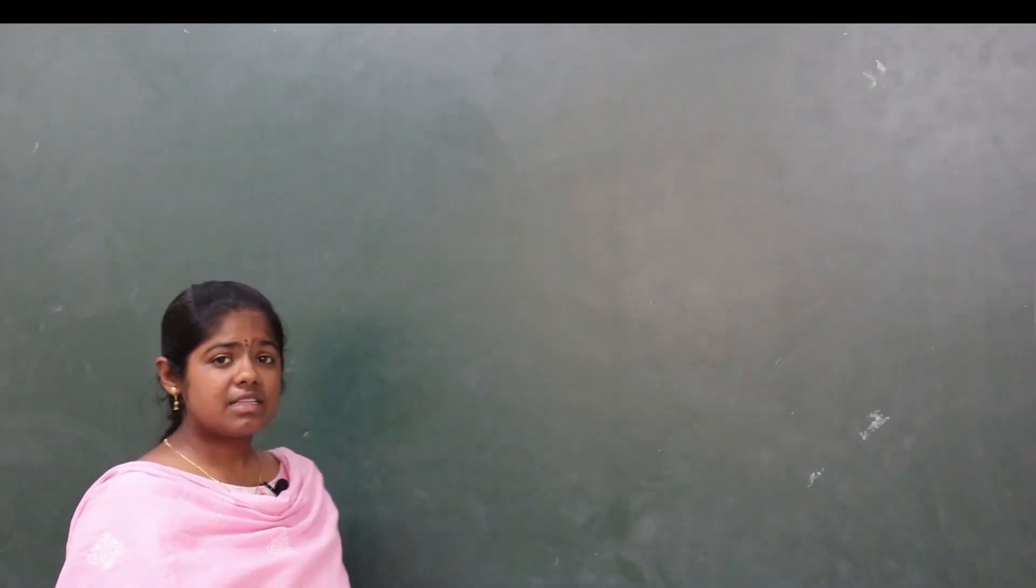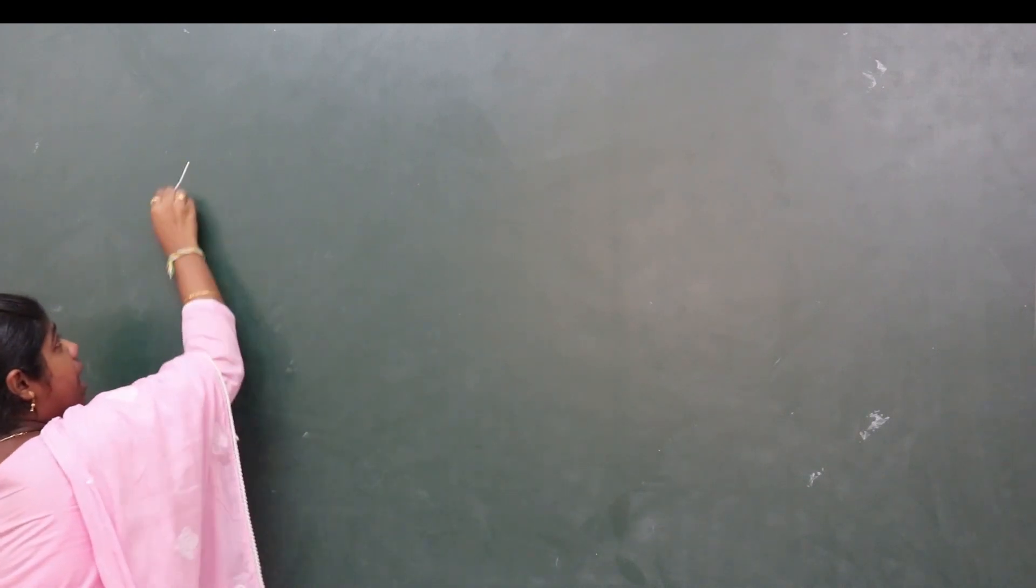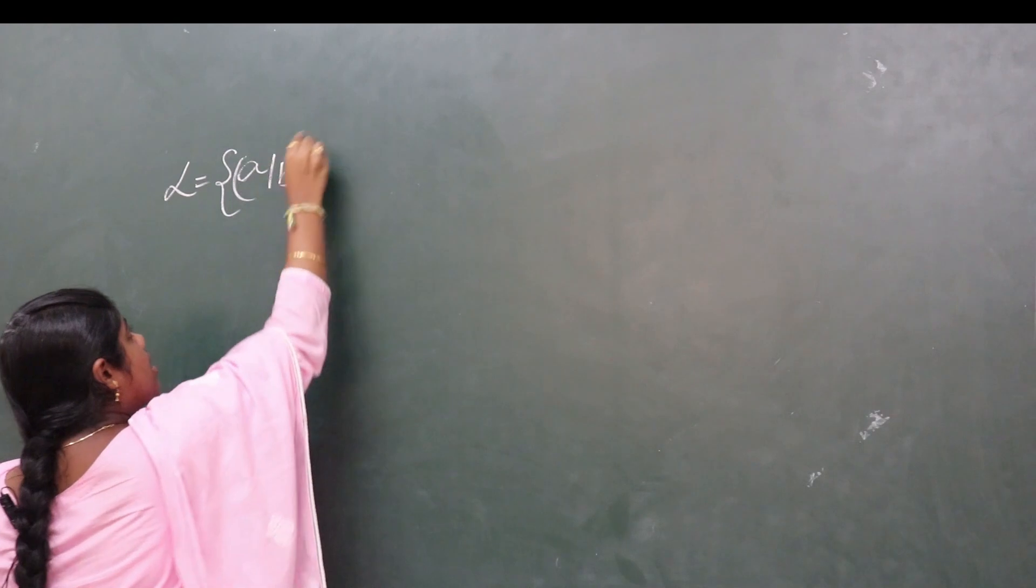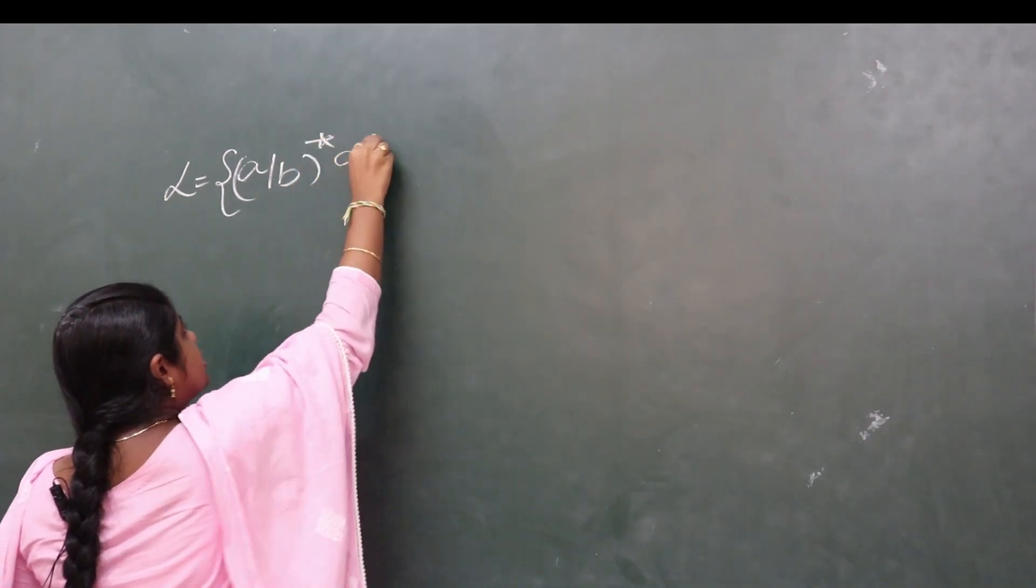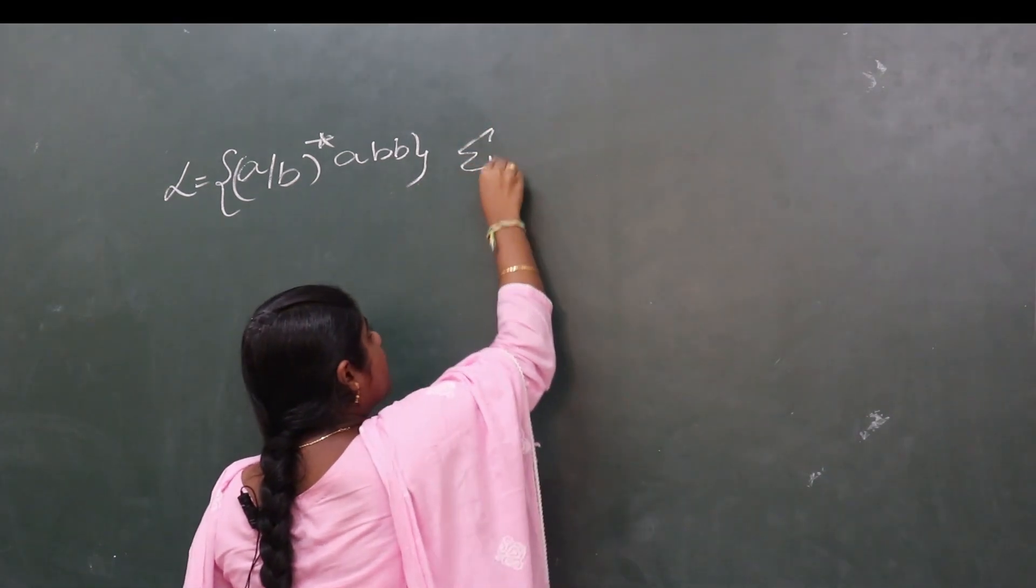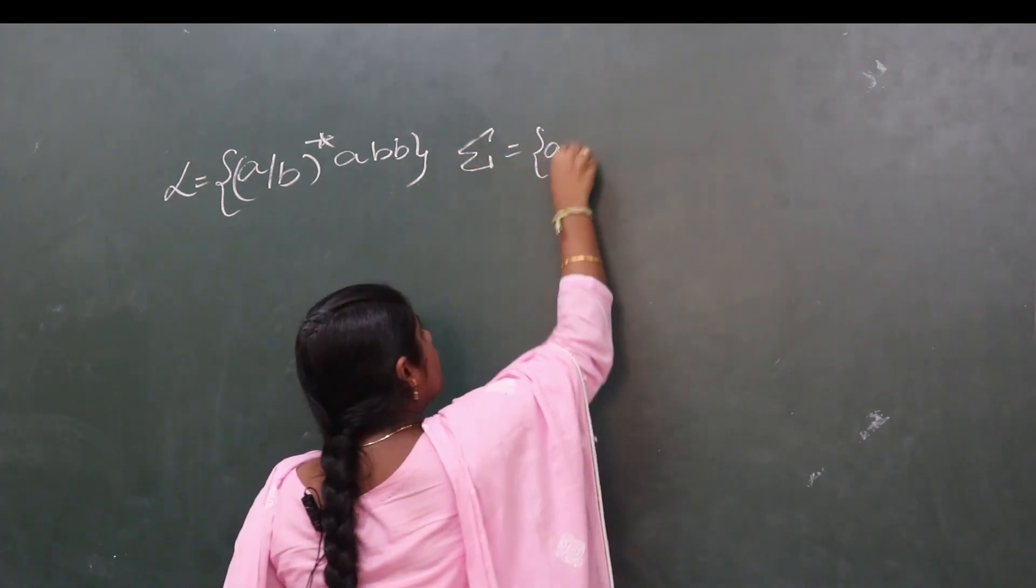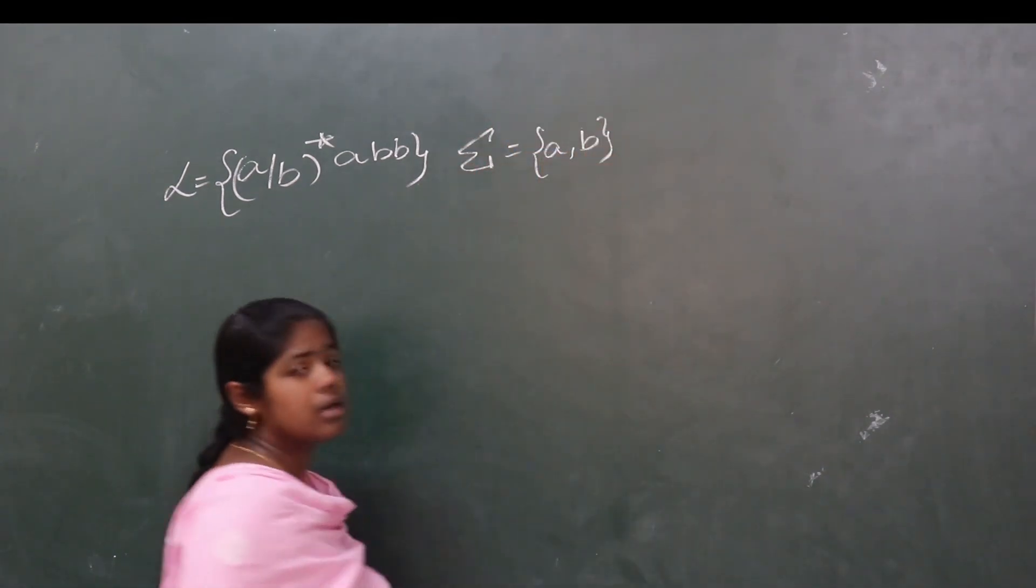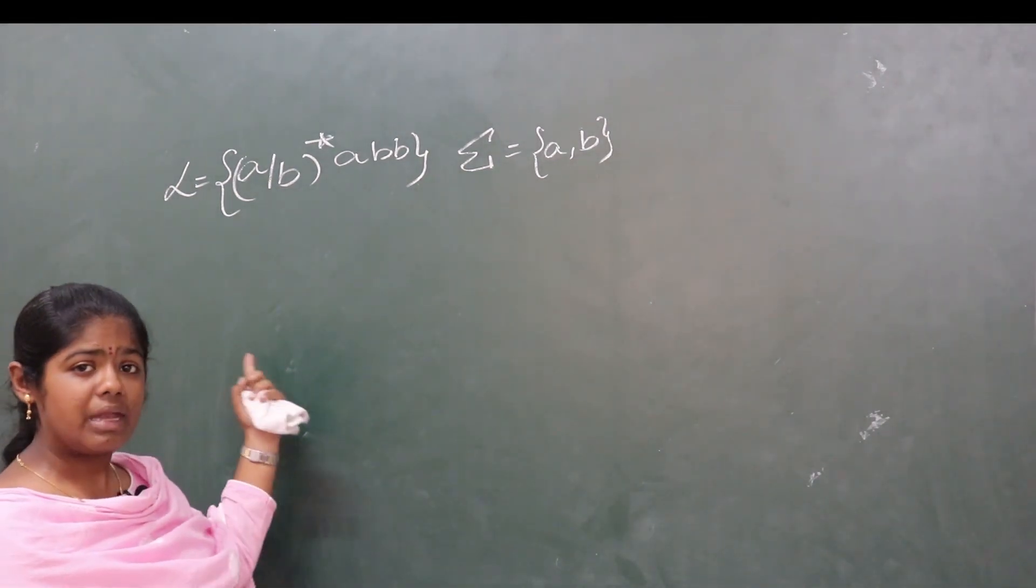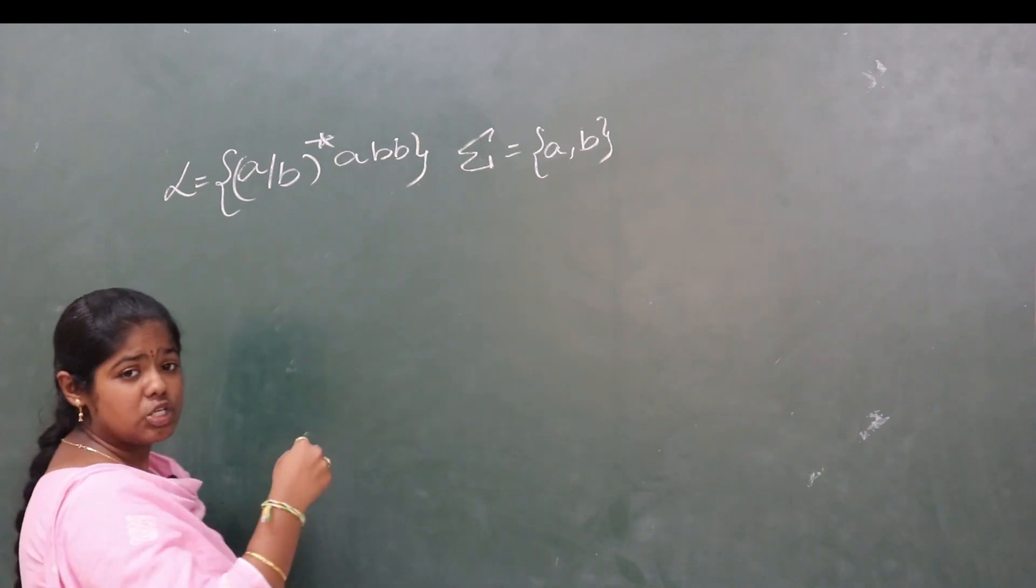Consider the language (a|b)*abb over the input alphabet set {a, b}. We need to construct the automata and determine the remaining four tuples.